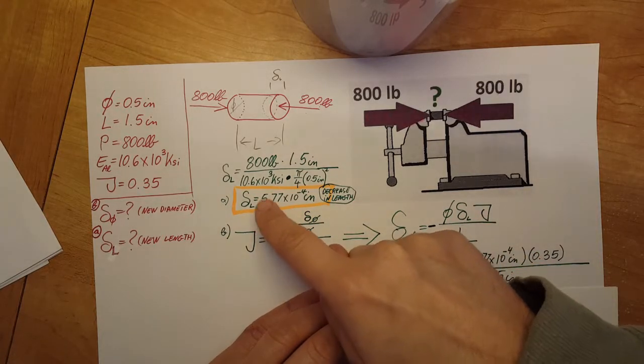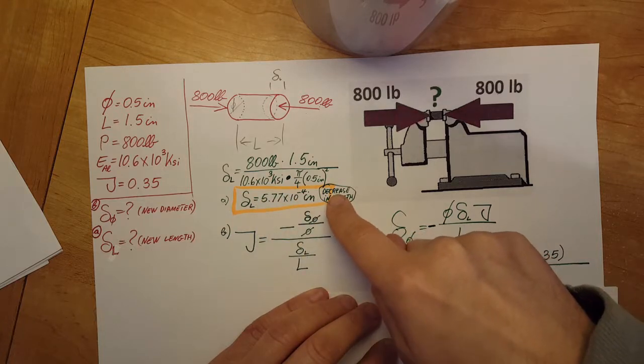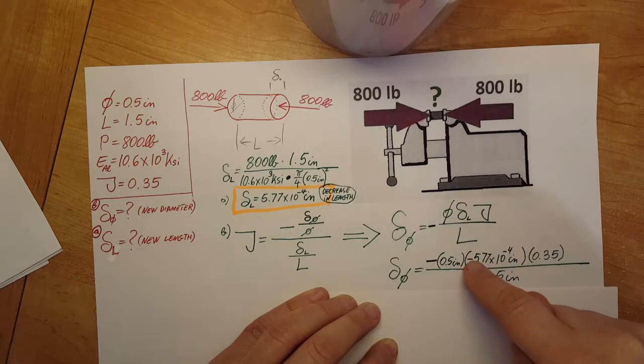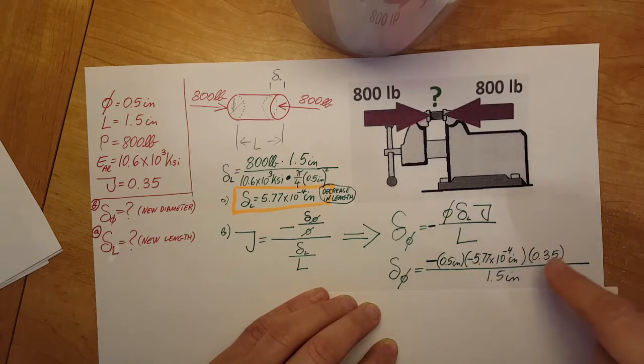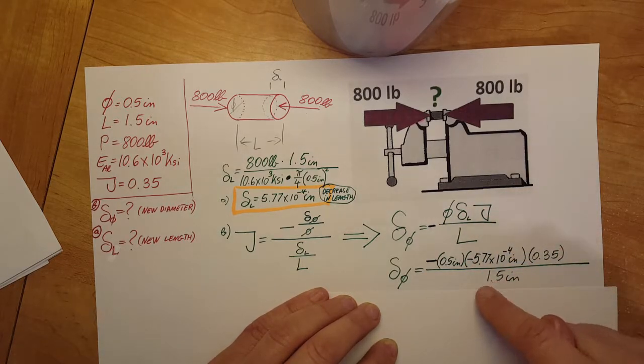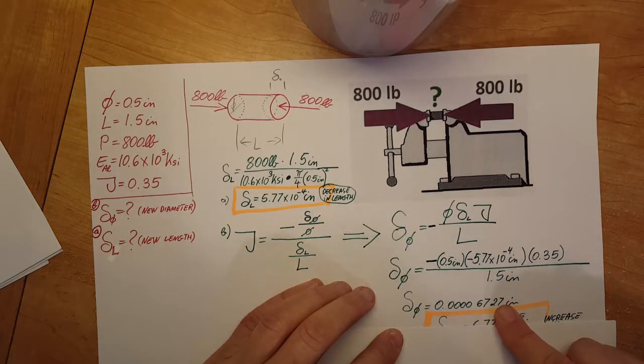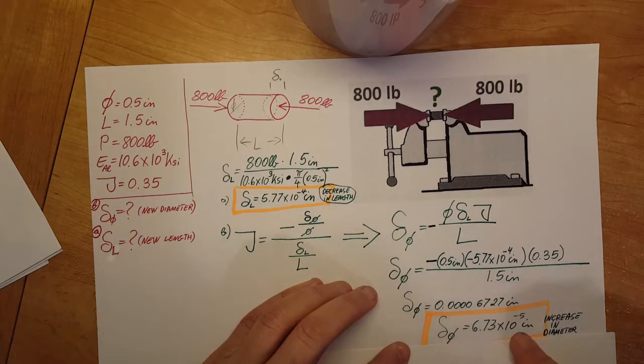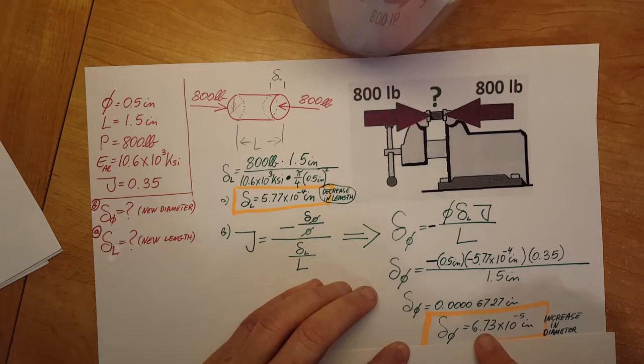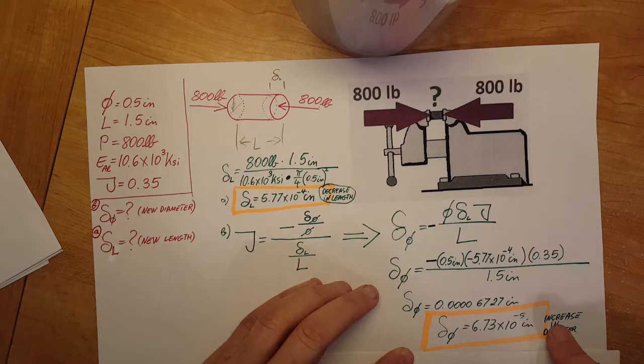Times nu divided by original length 1.5 inches. With the calculator, we can find the value. I rounded it to three significant figures and I wrote over here that it's an increase in diameter.